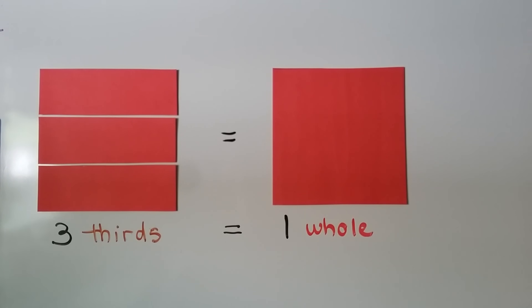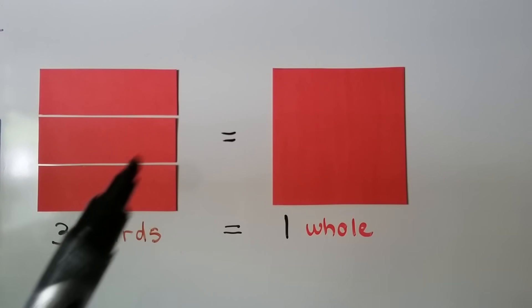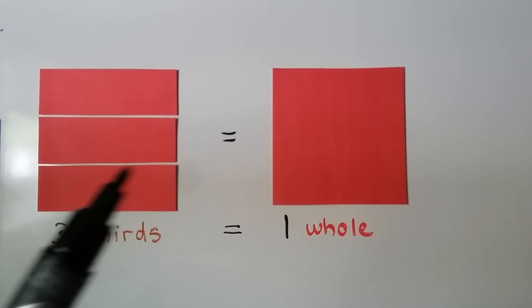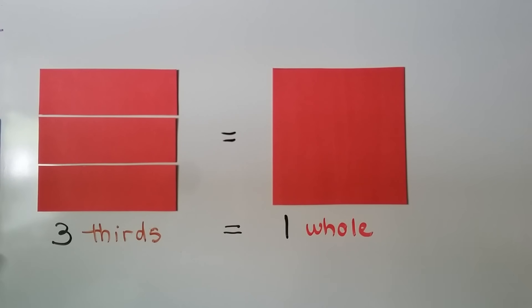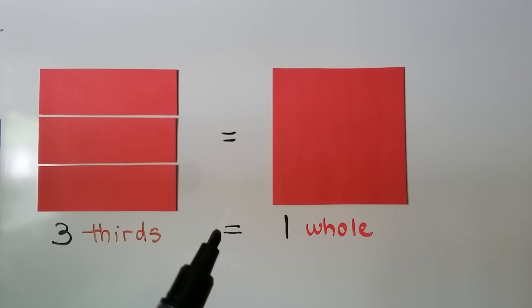Now we've taken the same big red square, and we've cut it into thirds. By putting a cut here and a cut here, we now have three equal parts. We have a third, a third, and a third of this whole square. We have three thirds, and all together, these three thirds are equal to that one whole square.